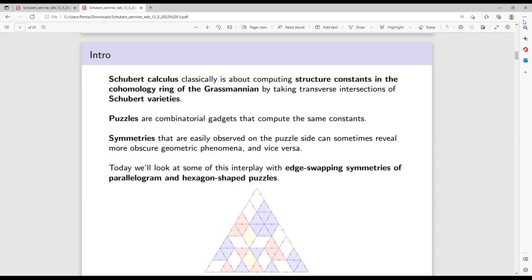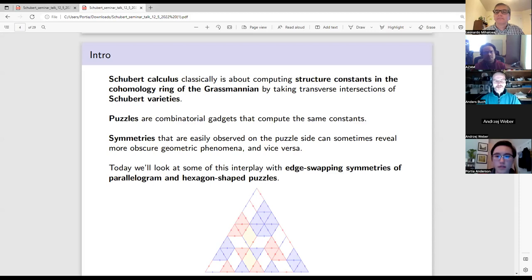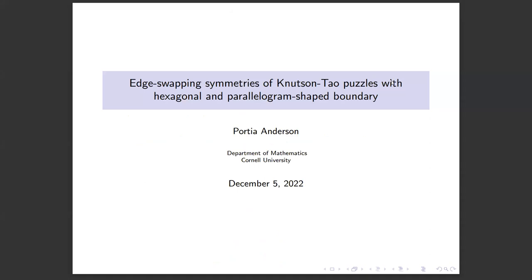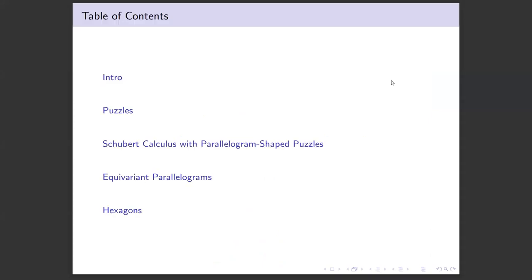Our next speaker is Portia Andersen, who will tell us about edge-swapping symmetries of Knutson-Tao puzzles with hexagonal and parallelogram-shaped boundary. Wait until you have your slides here. It's actually Portia, but that's okay. Sorry. No problem.